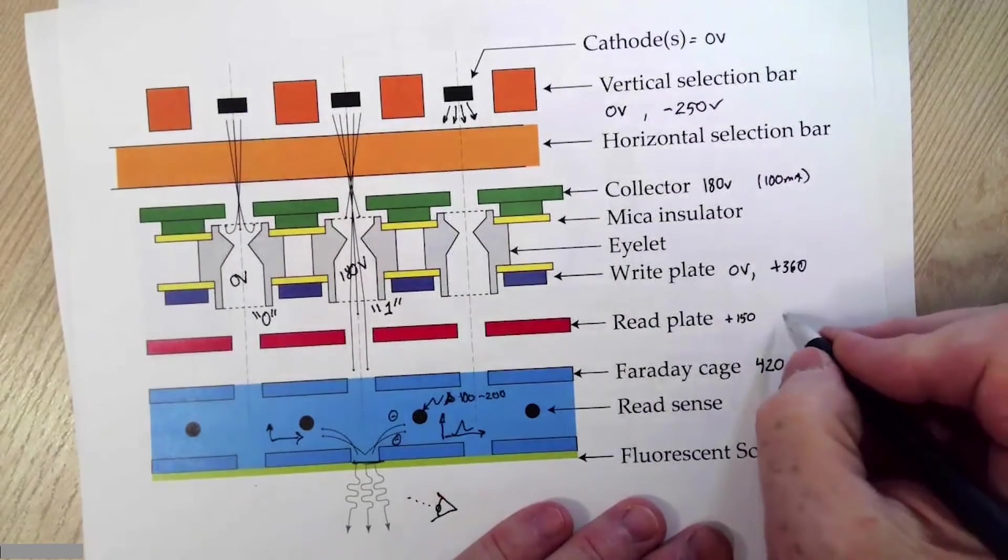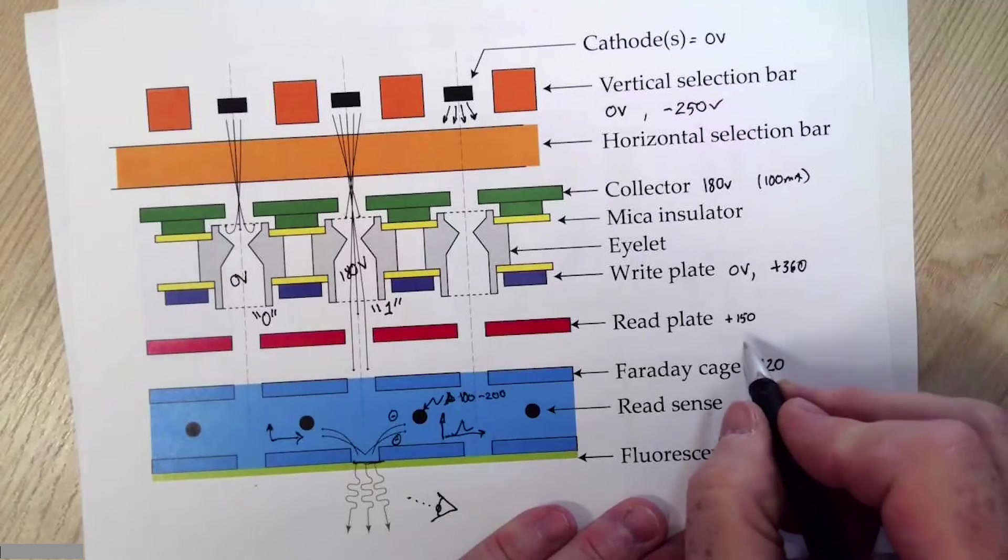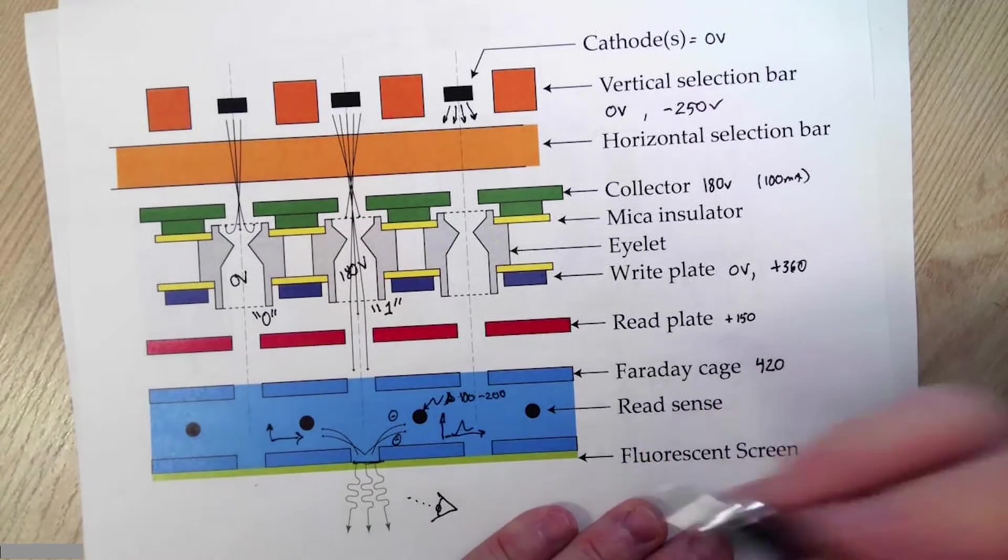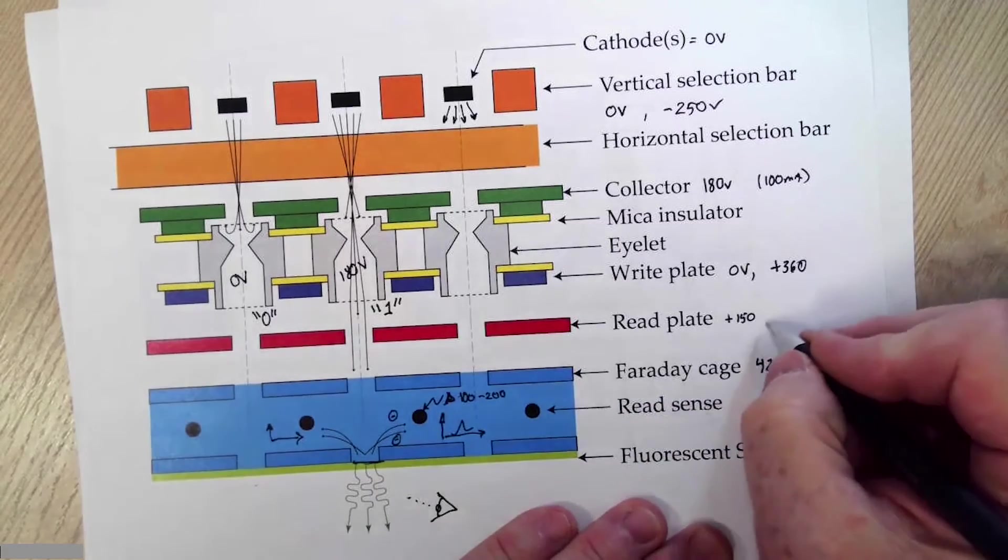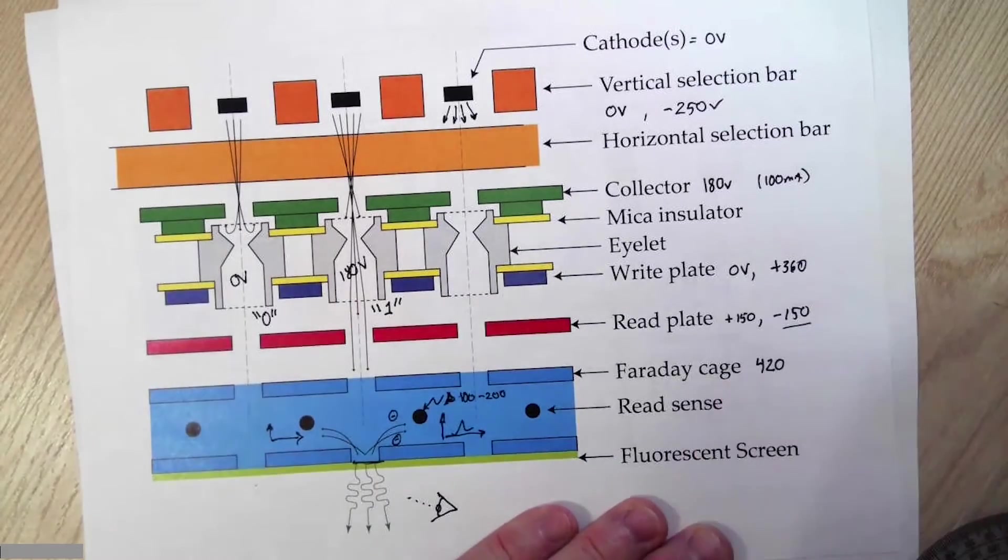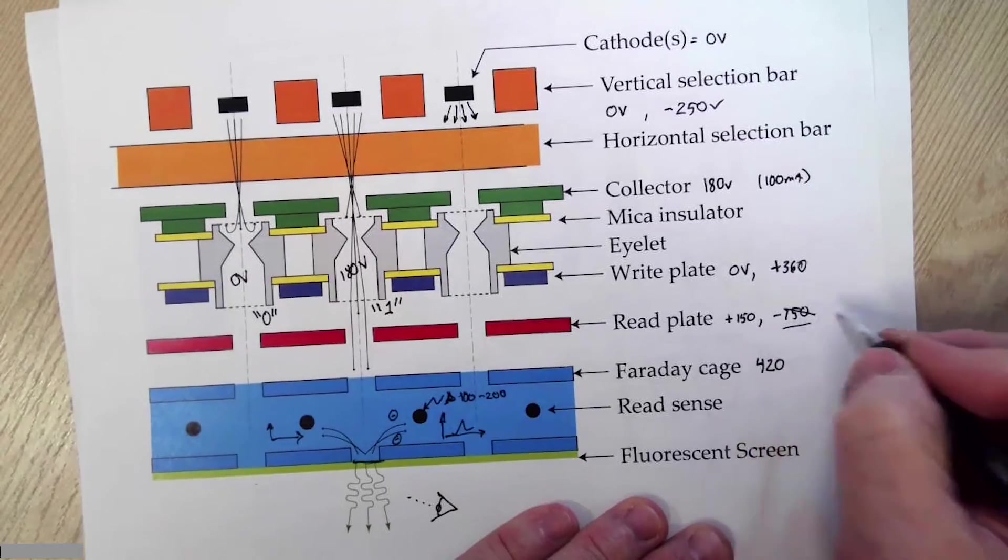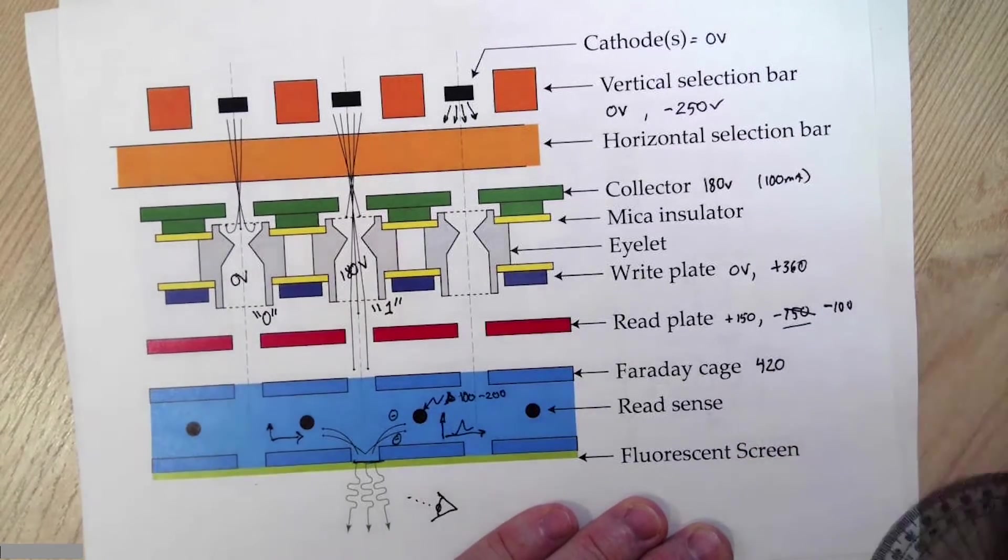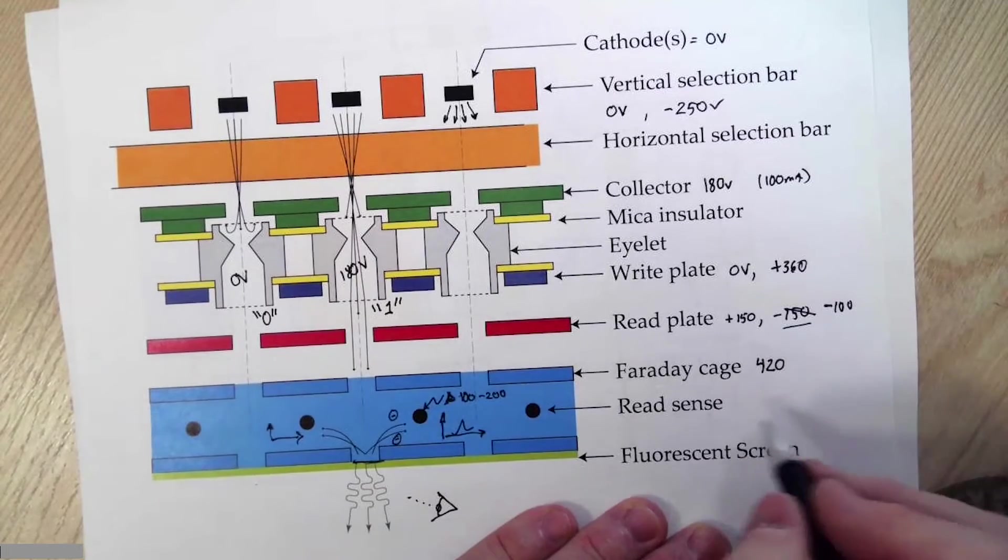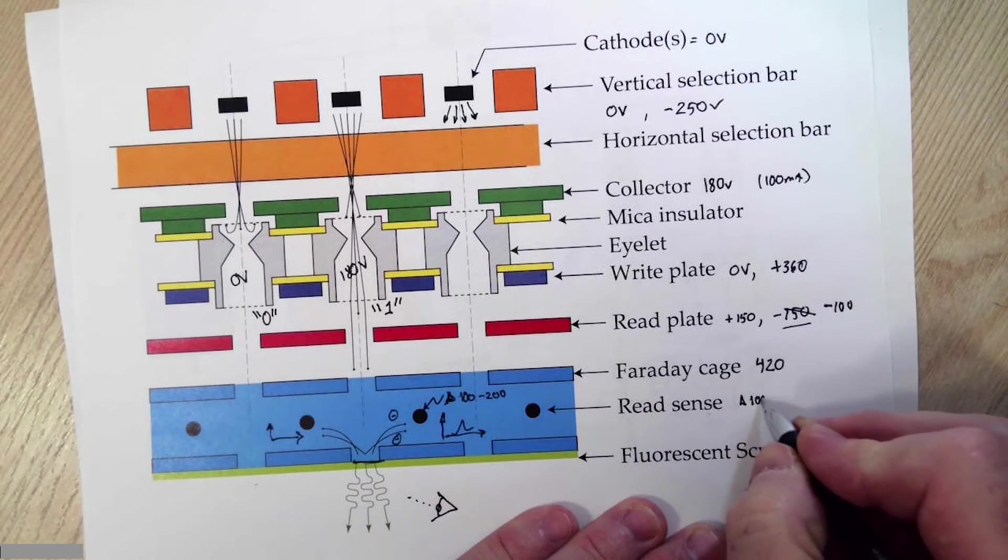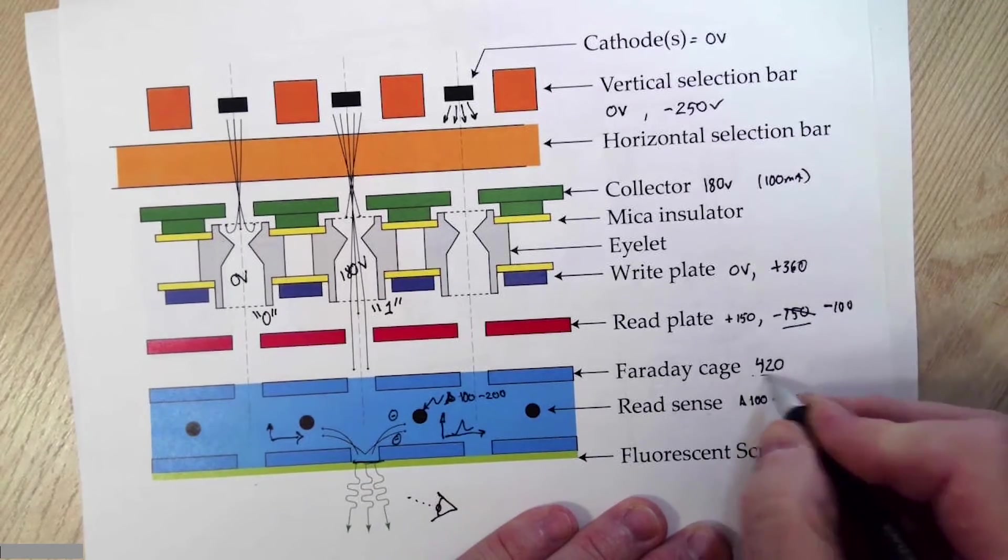The read plate, if I'm just interested in a visual display, I will leave it at 150. On the other hand, if I'm trying to do an electronic read, we will also need minus 100. And this would be the idle state, and I would pulse to positive 150. Faraday cage at 420. And then the read sense needs to be an additional 100 to 200 volts above this guy.